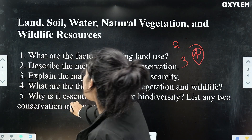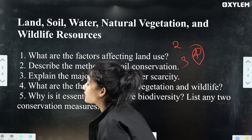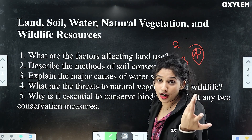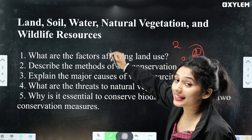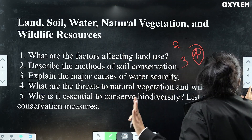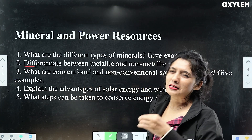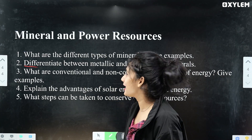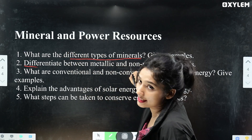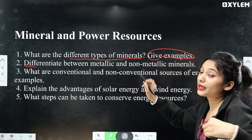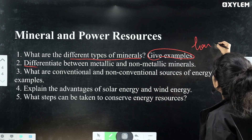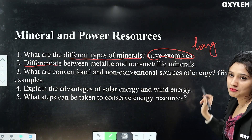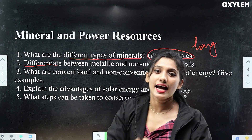The fifth and last question of this chapter: why is it essential to conserve biodiversity? List any two conservation methods — maybe a two-mark question. This is an important question. Now, the third chapter: Mineral and Power Resources. The first question: describe the different types of minerals with examples. This is a long answer type question. Next question: differentiate between metallic and non-metallic minerals with examples.